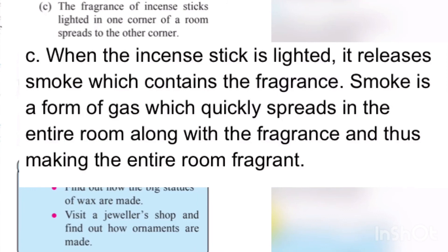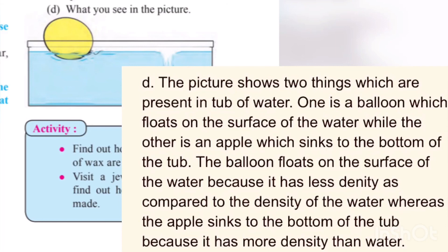Third: The fragrance of an incense stick lit in one corner of a room spreads to the other corner. Fourth: Looking at a picture showing two things in a tub of water — one is a balloon which floats on the surface of the water, while the other is an apple which sinks to the bottom of the tub. The balloon floats because it has less density compared to water, whereas the apple sinks because it has more density than water.